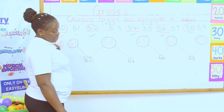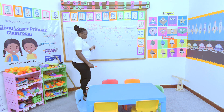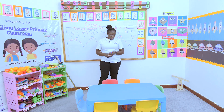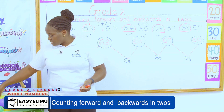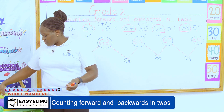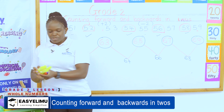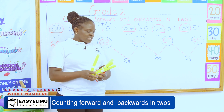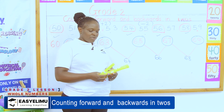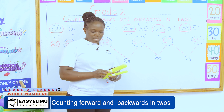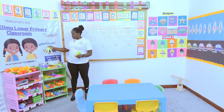Grade twos, are we together? Is that okay? What if I've been told to use the bundles of sticks? You can still use the bundles of sticks to show these numbers. I've been told: count backwards in twos from 84.